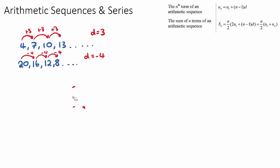If we have a sequence with dot dot dot and it goes forever, this indicates it's an infinite sequence — it will go on forever, all the way up to infinity. But if we have a sequence that actually stops — for example, 4, 7, 10, and then it finishes at 19 — this is a finite sequence. They've told you that the last term is 19. So infinite goes forever, and finite has an ending term.